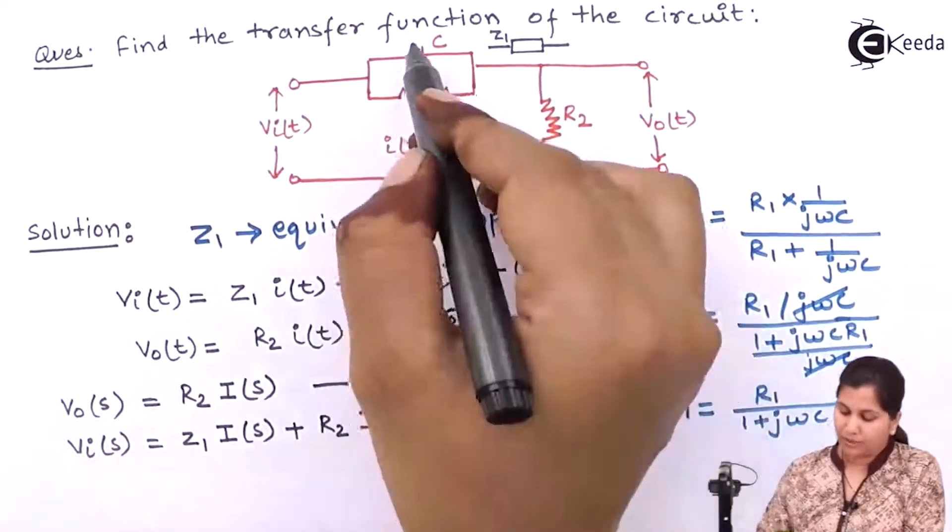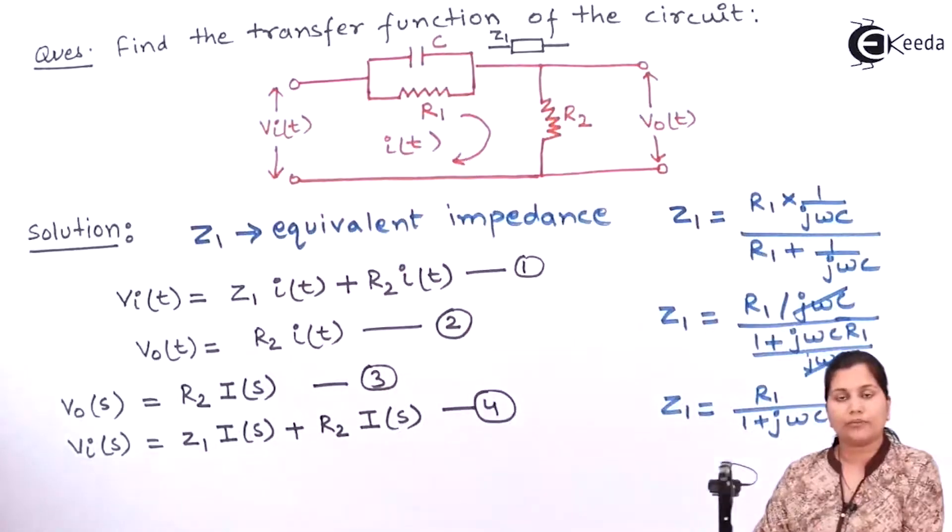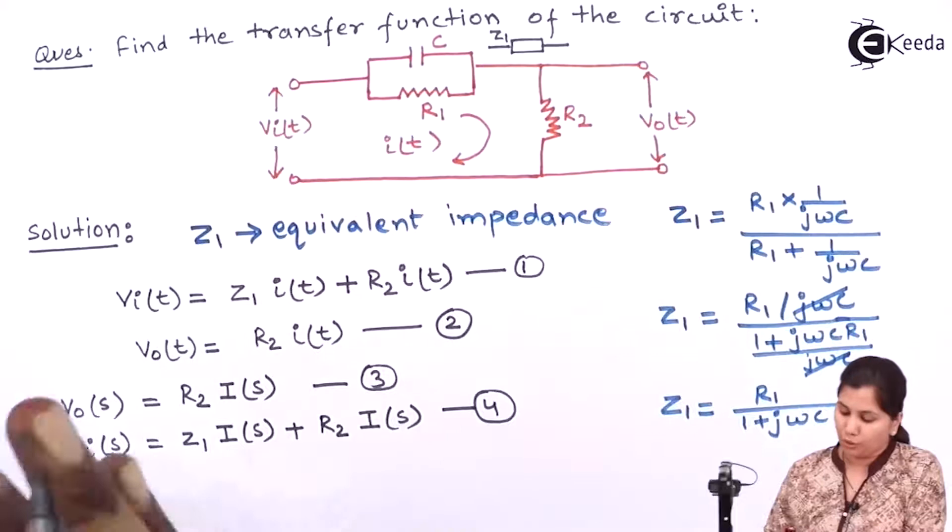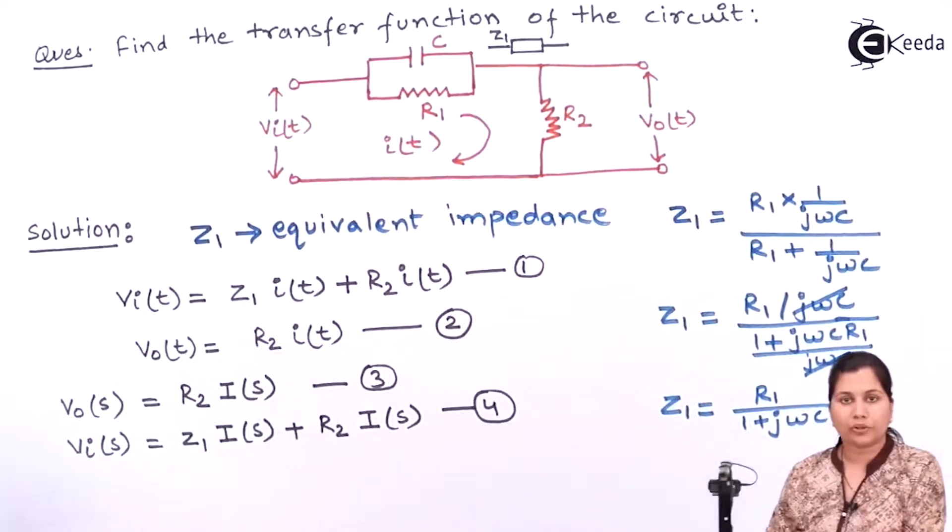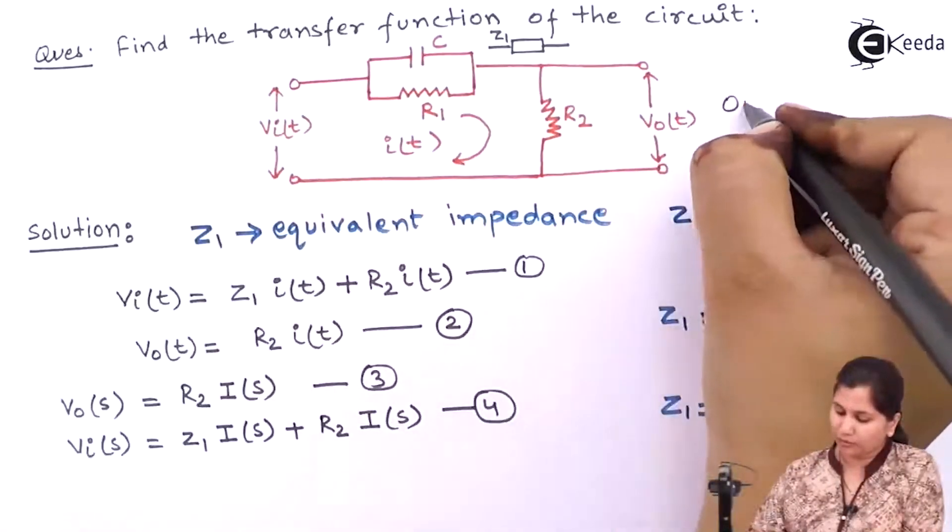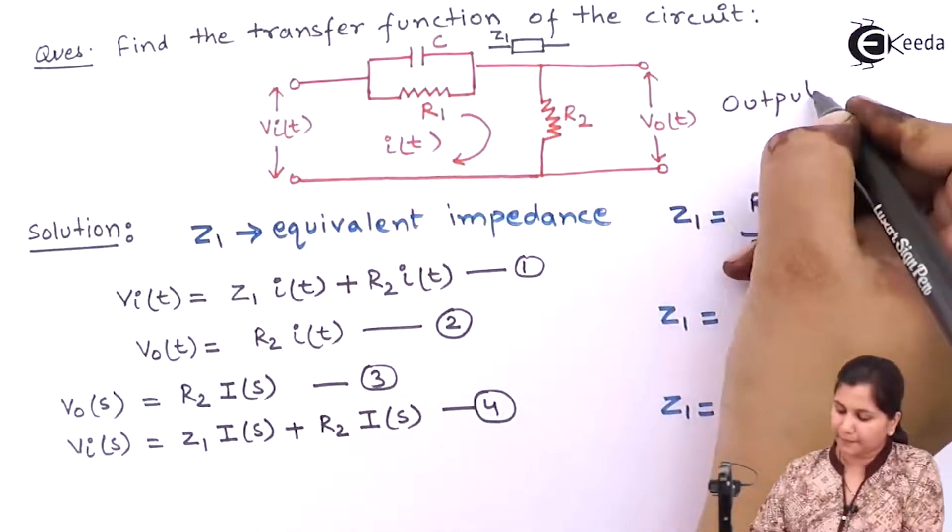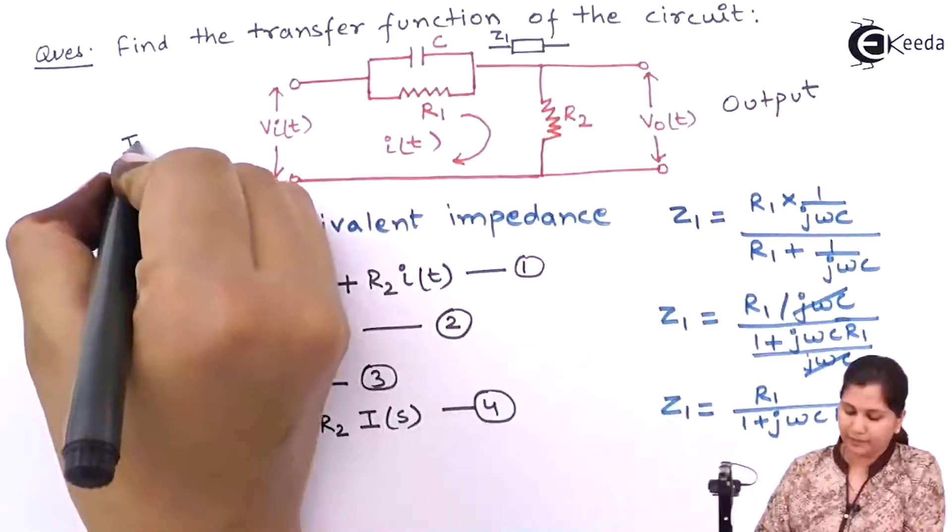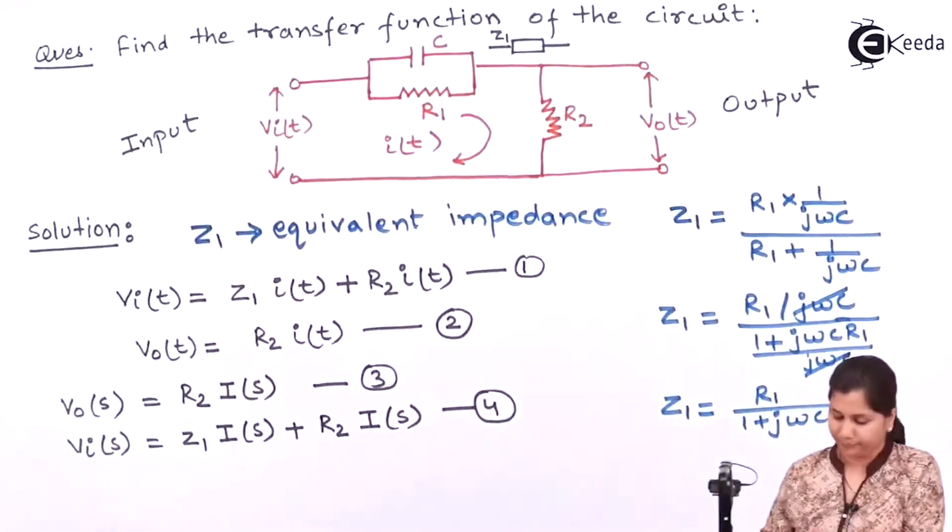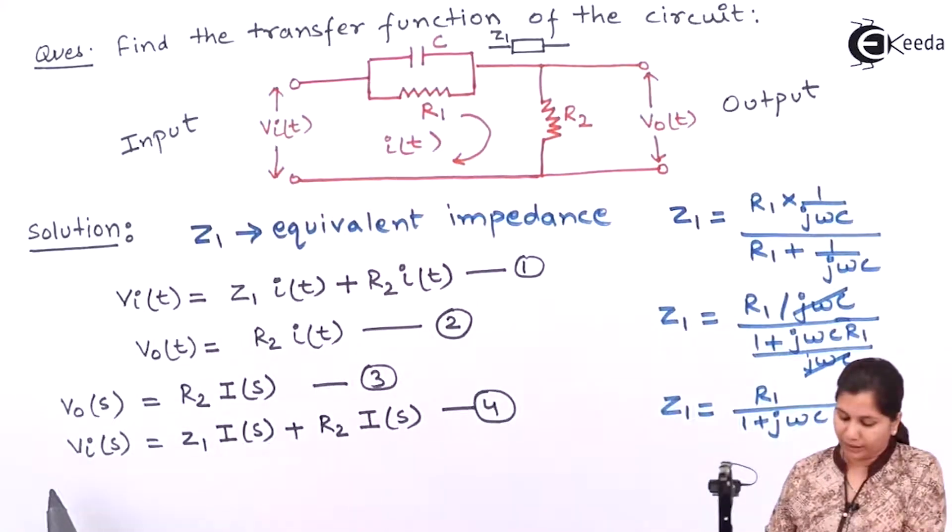Now transfer function, it is the ratio of the Laplace transform of the output and the input. So what is your output and what is your input? You have to take the ratio of that. So output is V0 and input is Vi. So we have to take the ratio of V0(s) and Vi(s).